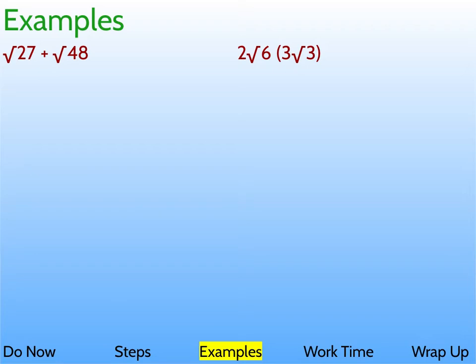Wait. Hold on. I forgot. We got to first try to simplify these. So let's try to simplify 27. We get 3 and 9. And then, 9 goes to 3 and 3. So with this, we got a pair of 3s and we got a 3 left over. That means one of the 3s comes outside. The leftover 3 here stays inside. That's 3 radical 3.